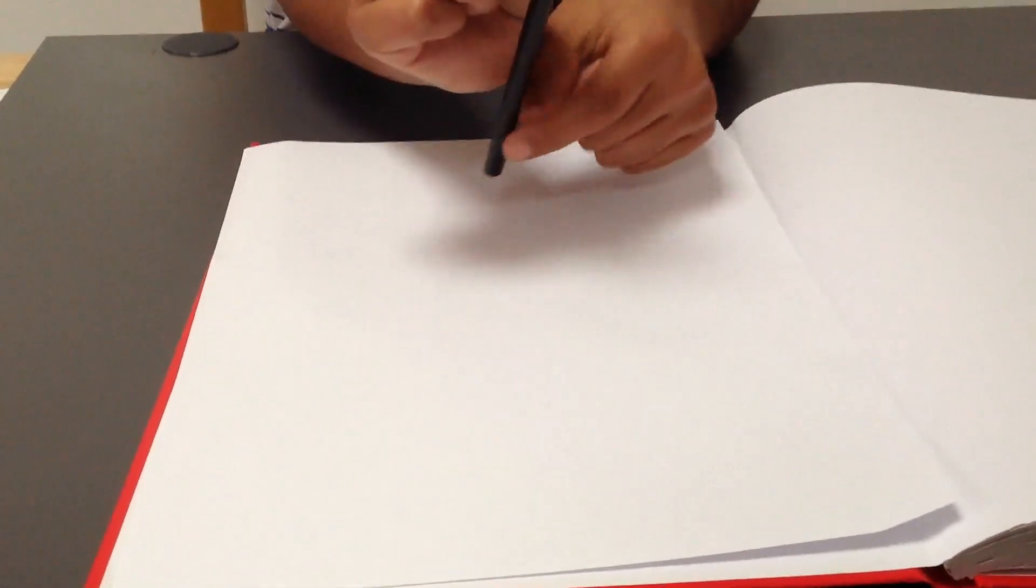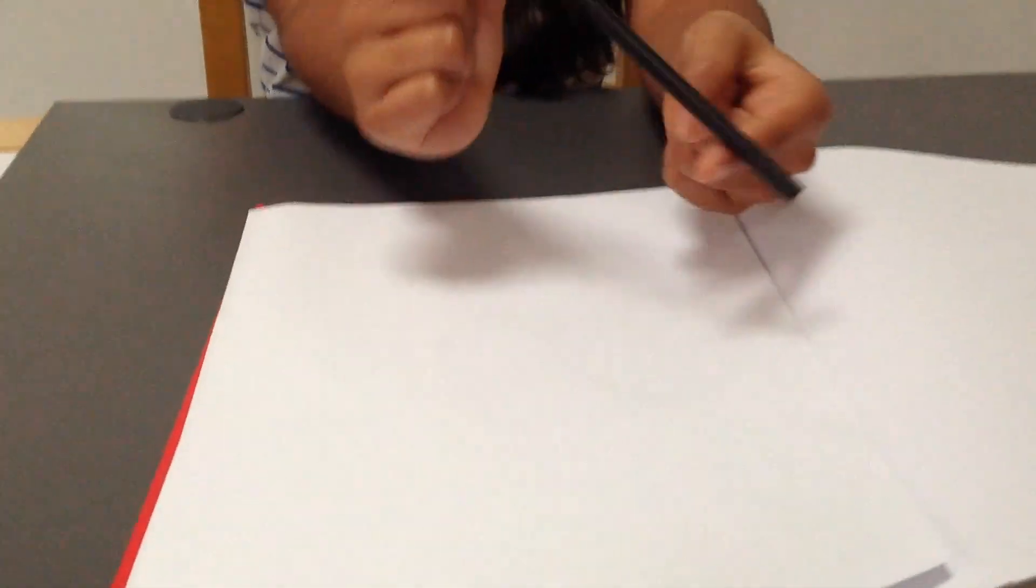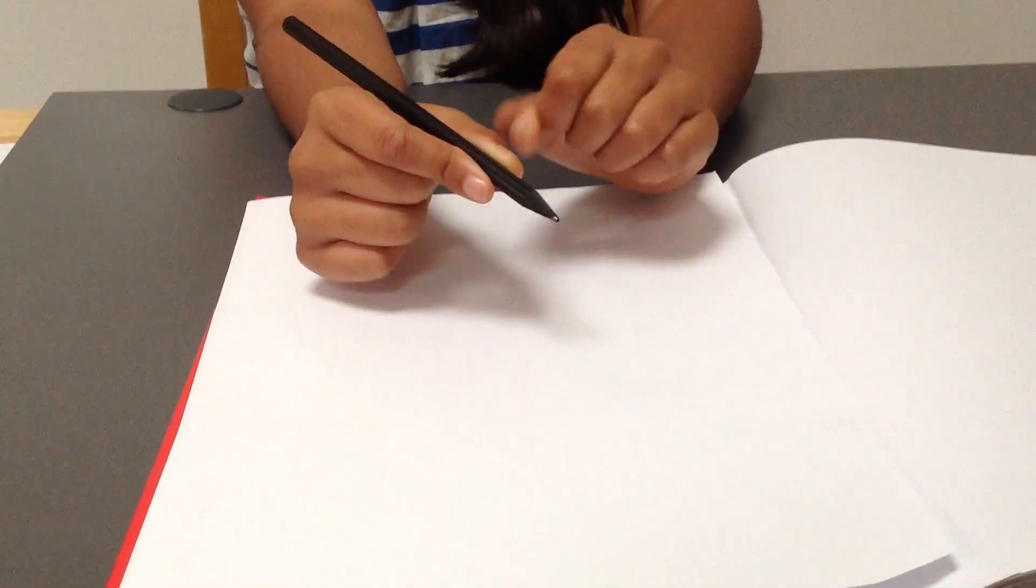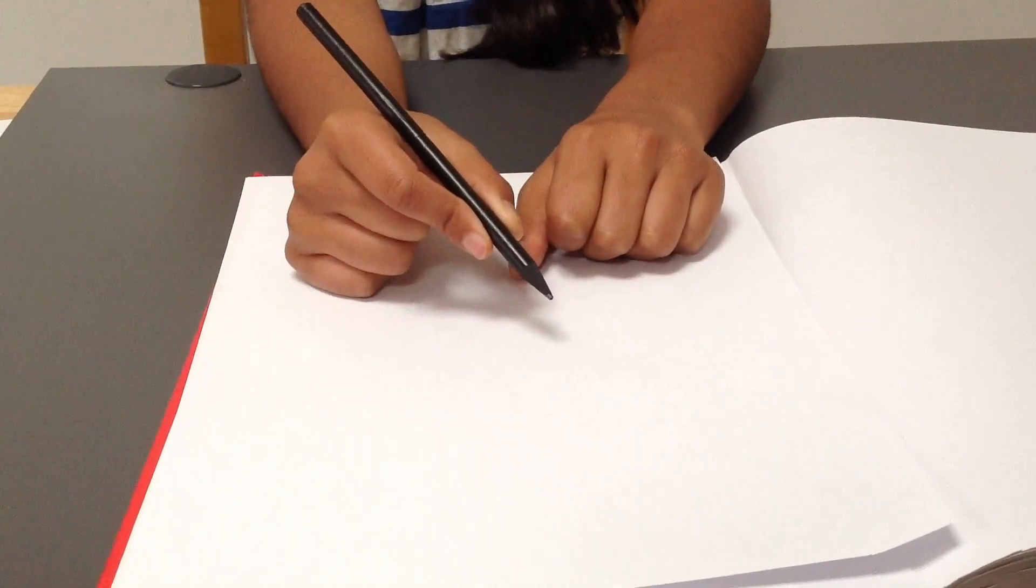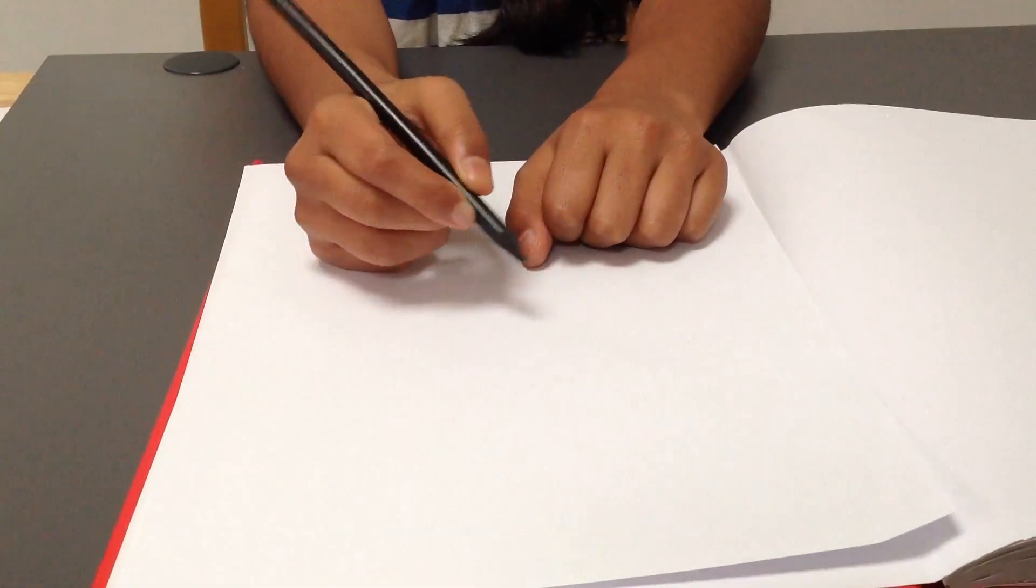Then, with your other hand, turn the pencil to rest in between your thumb and index finger, like this. Now, your middle finger should be supporting the pencil.